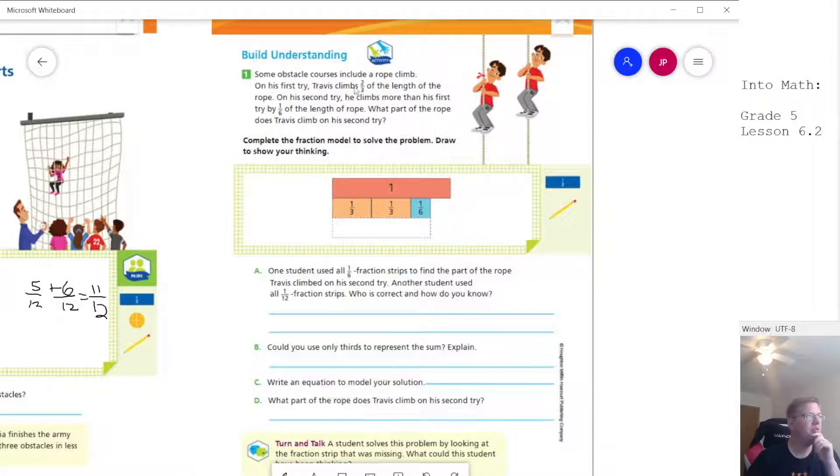I normally draw them separately, like I've been showing you in the last couple of videos. Some obstacle courses include a rope climb. So it says Travis climbs two thirds of the length. On the second time, he climbs more than the first try by one sixth.